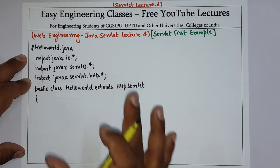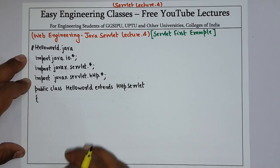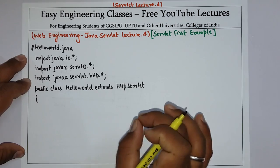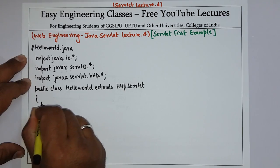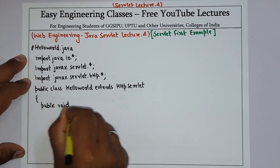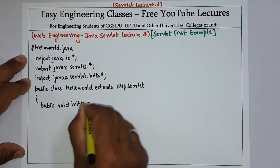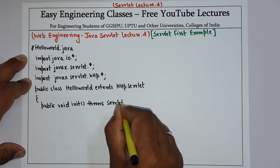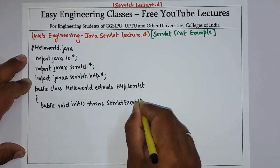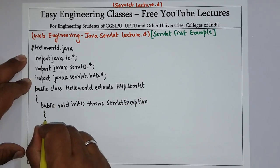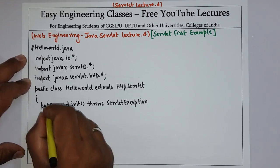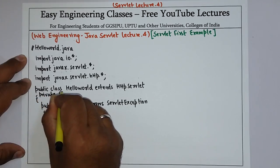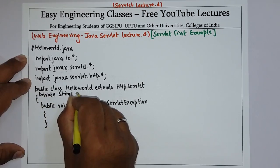As we have discussed some of the methods in the servlet life cycle, in this program we are going to initialize one string, and that initialization should be done in the public void init method. So declare that method: public void init throws ServletException. We have also declared a private string variable called message inside the class.